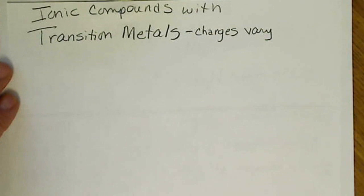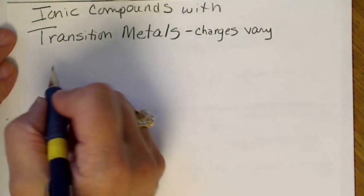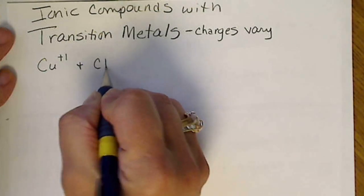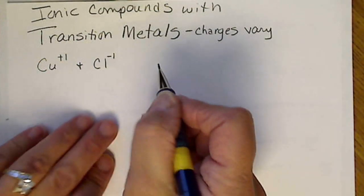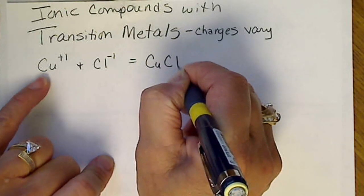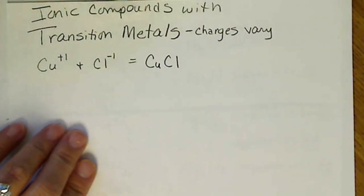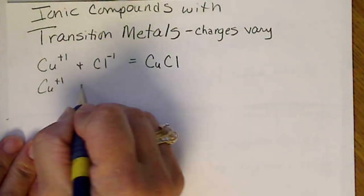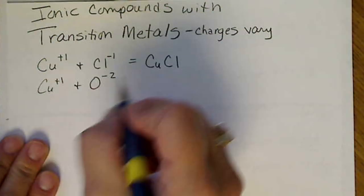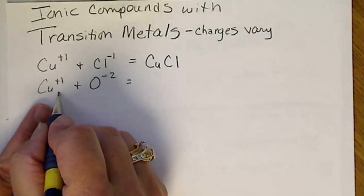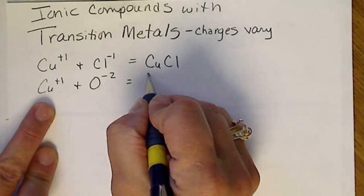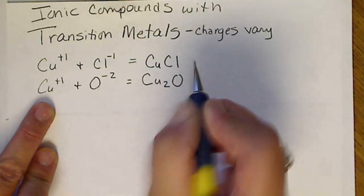So the transition metal that I'm going to use is going to be copper plus 1. If copper plus 1 gets together with Cl minus 1, then we're going to have 1 copper to 1 chloride. If copper plus 1 gets together with oxygen, which is a minus 2, the formula is going to require 2 copper plus 1's for every 1 oxygen. So this will be Cu2O.